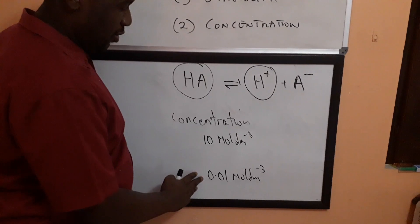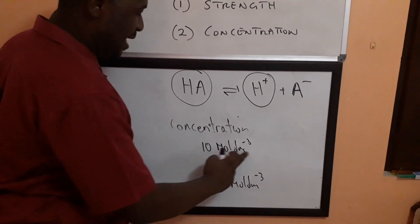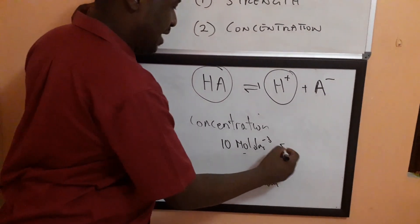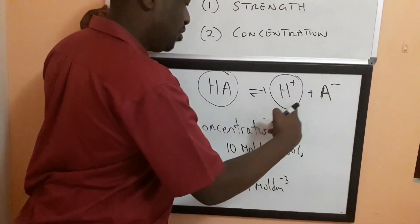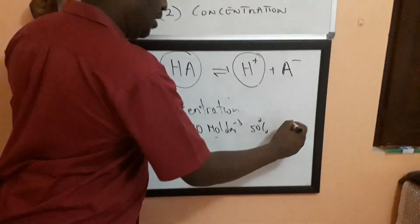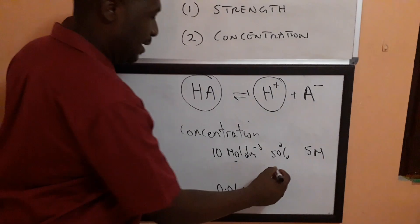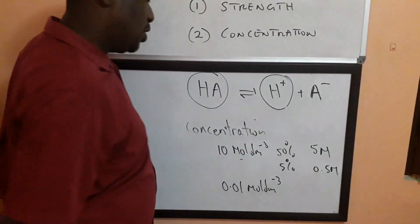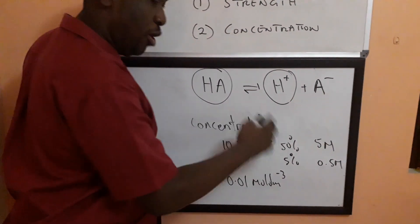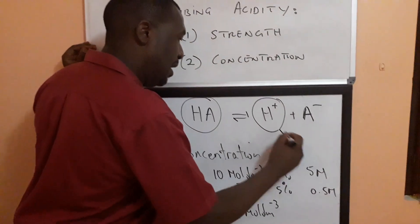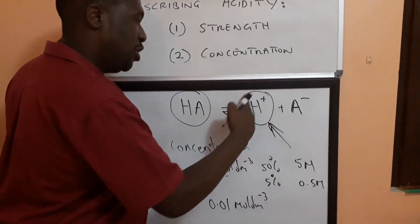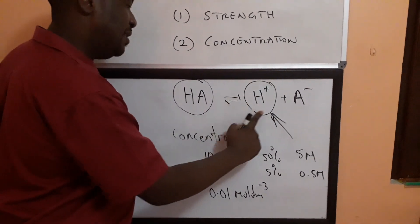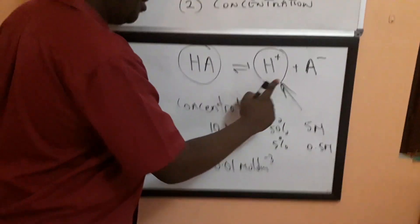But strength also plays a role. Obviously if I have a 10 molar HA solution and it is only 50% dissociated then the concentration of H plus would be only 5 molar. If it is 5% dissociated then it's 0.5 molar. So the degree of dissociation or the strength also plays a role in the concentration of the H plus ions. Remember the H plus ions are the active ingredient in an acid. The active ions in an acid. Those are the ones that really react.